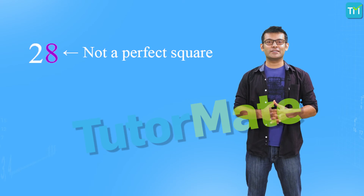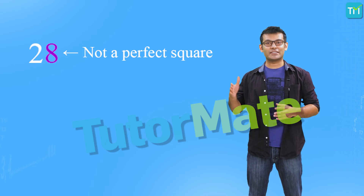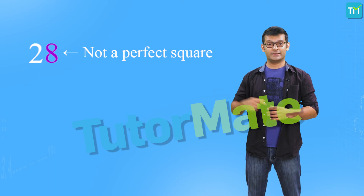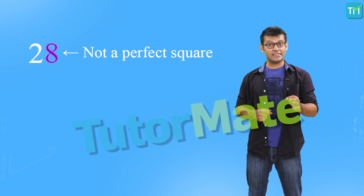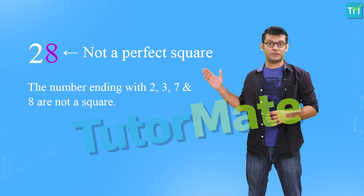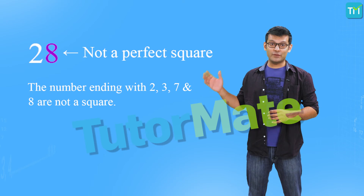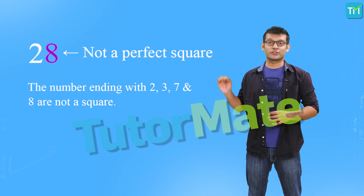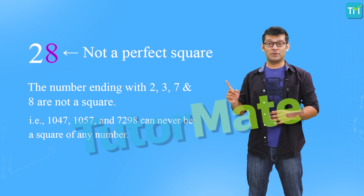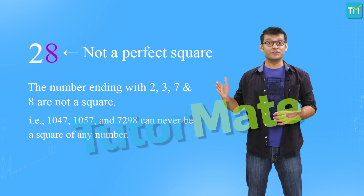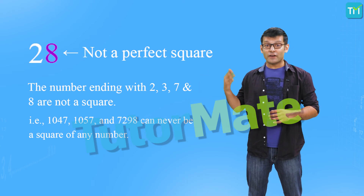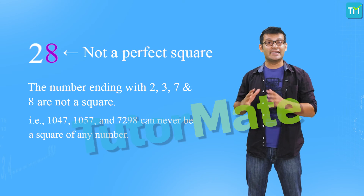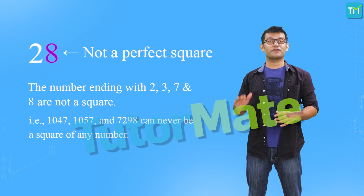We can conclude that the digit at the units place of a square can never be 2, 3, 7 or 8. Hence, if a number is ending in any of these, then we know that that number is definitely not a square. This means that numbers like 1047, 1057 and 7298 can never be a square of any number.